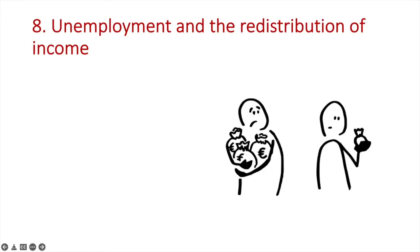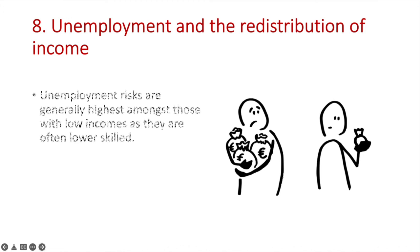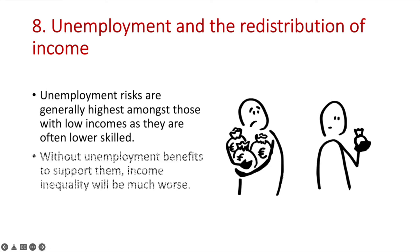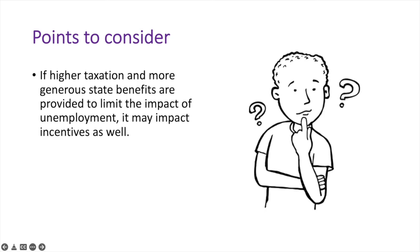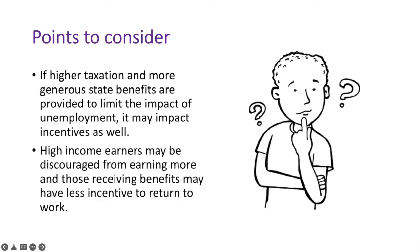Last up is the relationship between unemployment and the redistribution of income. Unemployment risks are generally highest amongst those with low incomes, as they are often lower-skilled. Without unemployment benefits to support them, income inequality will be much worse. However, if higher taxation and more generous state benefits are provided to limit the impact of unemployment, these policies may impact incentives. High income earners may be discouraged from earning more and working harder, and those receiving benefits may have less incentive to return to work.